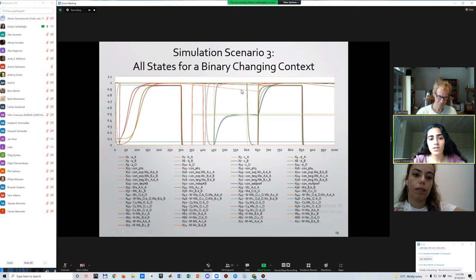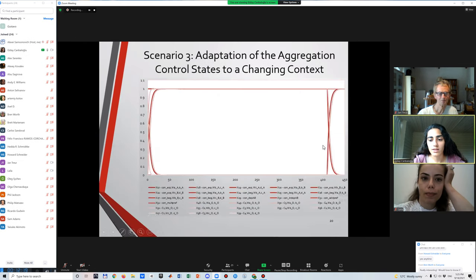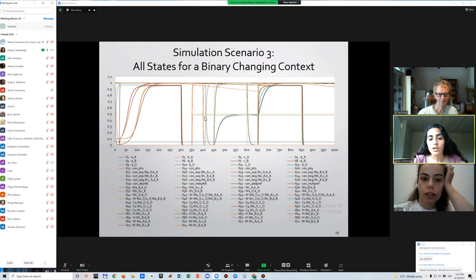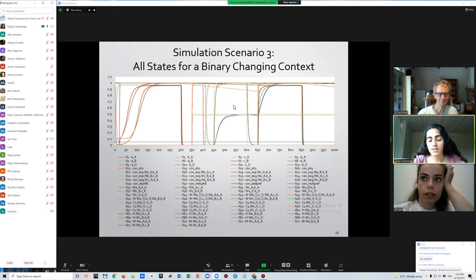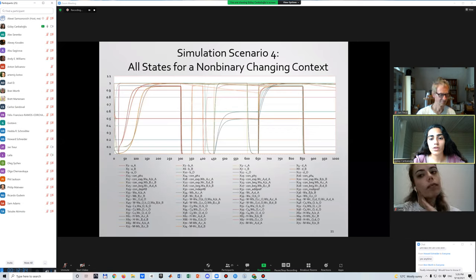In this third scenario, we again used binary values for context factors. They are again 0 or 1. But in this time, we changed the context at 400. With the help of step function, we have a context here, we have a case here. But after 400, we changed our context, as you can see here. Therefore, the combination functions are also changed according to the changing context.